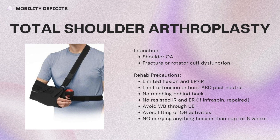Total shoulder arthroplasty is indicated for shoulder OA or fracture or rotator cuff dysfunction requiring replacement. After surgery, rehab precautions include limited flexion and external rotation more than internal rotation, limiting extension or horizontal adduction past neutral, no reaching behind the back, no resisted internal or external rotation — especially if the infraspinatus is repaired — avoid weight bearing through the upper extremity, avoid lifting or overhead activities, and no carrying anything heavier than a cup for six weeks. Typically they'll be braced in slight flexion and adduction.